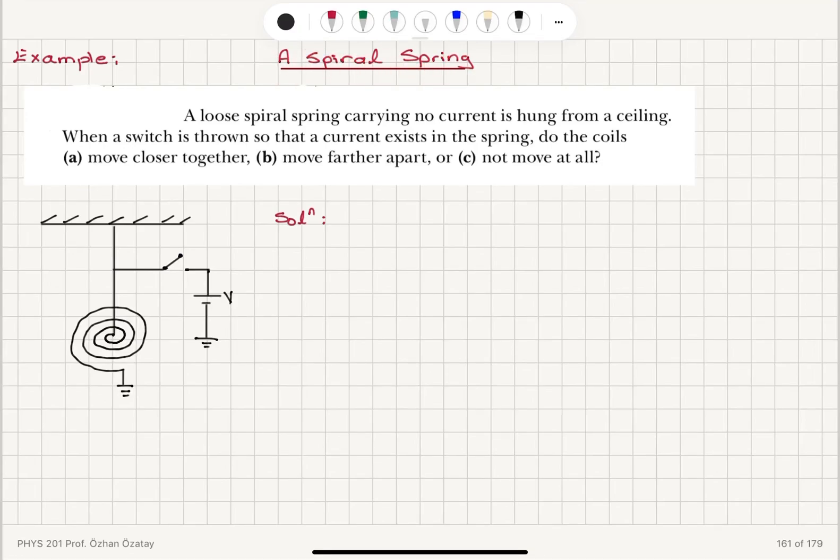A spiral spring. A loose spiral spring carrying no current is hung from a ceiling, like this. When the switch is thrown so that a current exists in the spring,